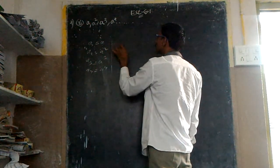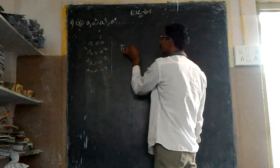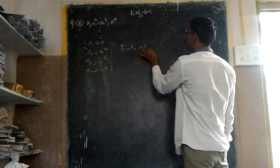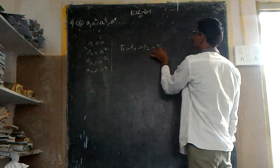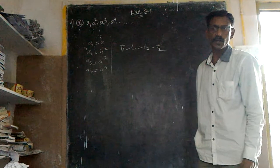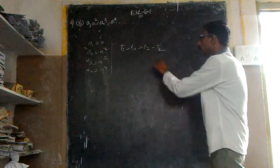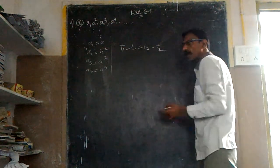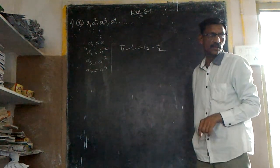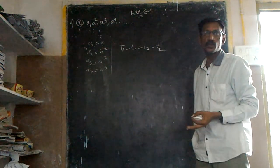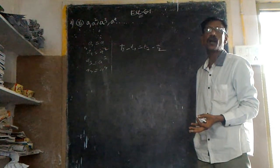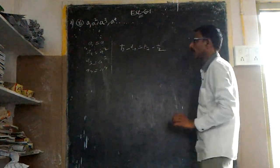T2 minus T1 is equal to T3 minus T2. If they are equal, they are in A.P. If not equal to one another, they are not in A.P.